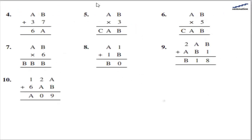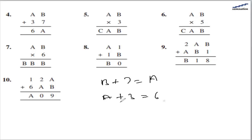The fourth part is ab plus 37 gives 6a. That means b plus 7 is a, and a plus 3 gives 6. Since we are adding 3 to a and getting 6, a can have a value of either 2 or 3 — because 3 plus 3 is 6. But if a is 2, that means there is 1 carry.